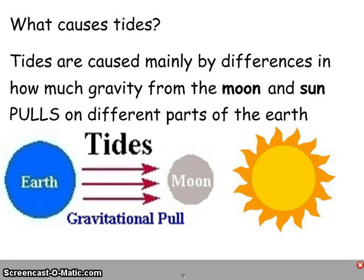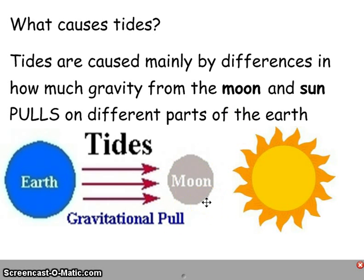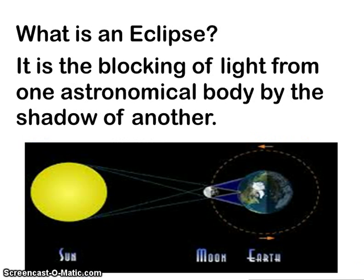The earth, moon, and sun together also create eclipses. Please turn your note-taking sheet over to the back where it says eclipses. Eclipses are a block of light from one celestial body to another.